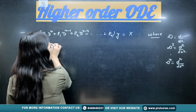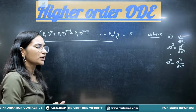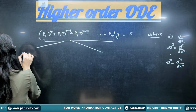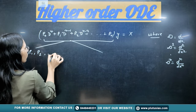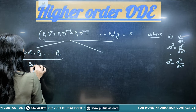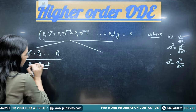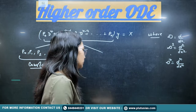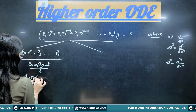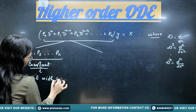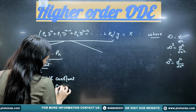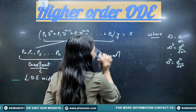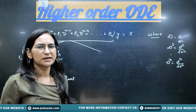Now it matters what p₀, p₁, p₂ up to pₙ are. There are two formats. If all of them are constant, then this differential equation is known as a linear differential equation with constant coefficients. But if they are not constant — if all or some of p₀, p₁ up to pₙ are functions of x — then we have a different situation.